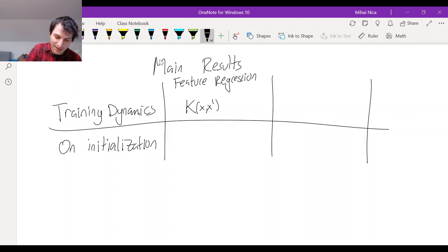So there's k of x, x prime, which is the average over the features phi x transpose phi x prime, and it is responsible for both of these things. So it tells you what happens on initialization, and it tells you the training dynamics and how things evolve. That's for feature regression. It's the same thing twice.